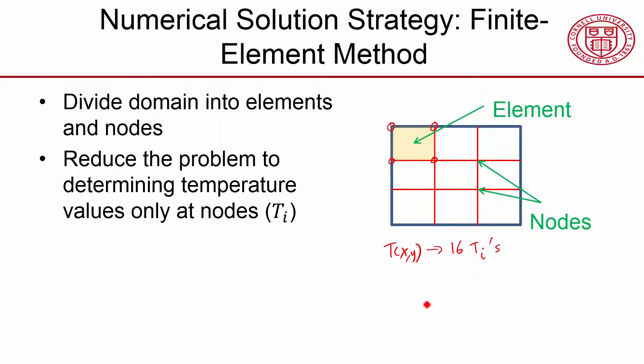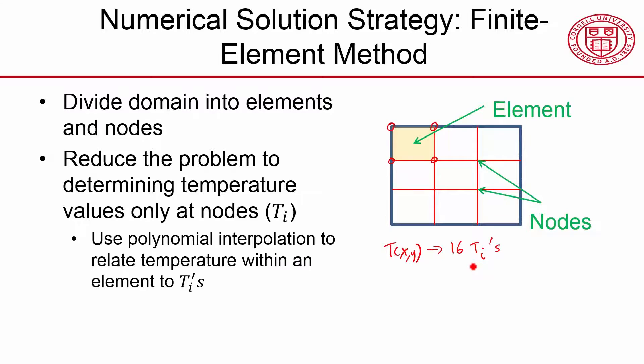We use polynomial interpolation to relate temperature within an element to the nodal temperatures. If I want to know what's the temperature there, I would interpolate between these four values.